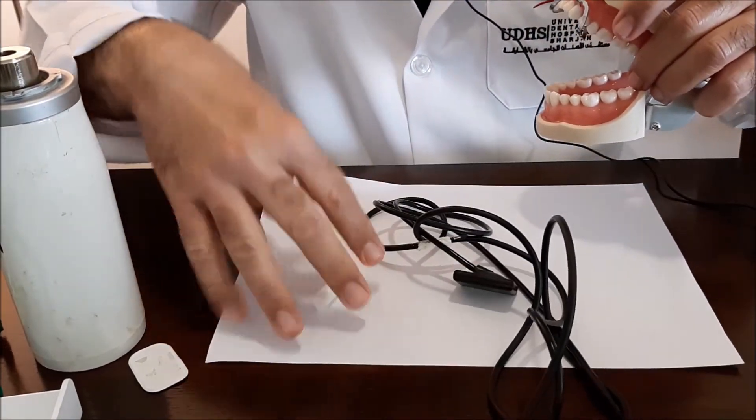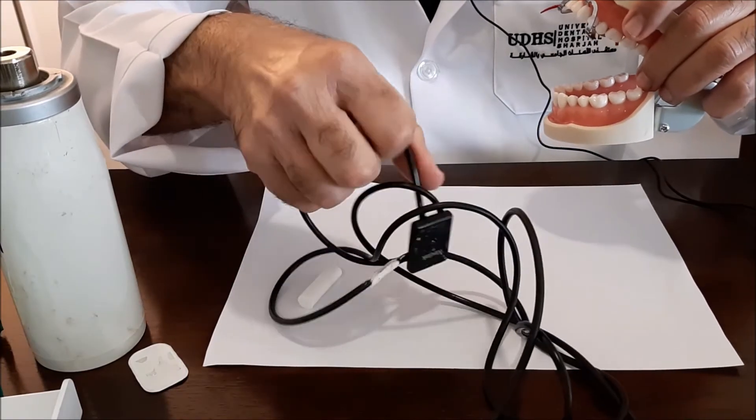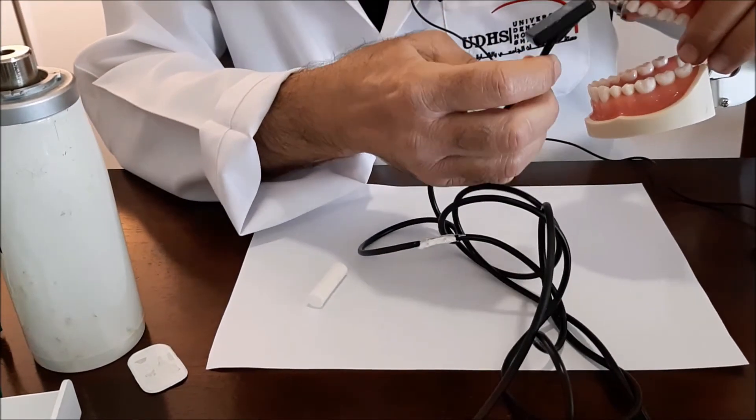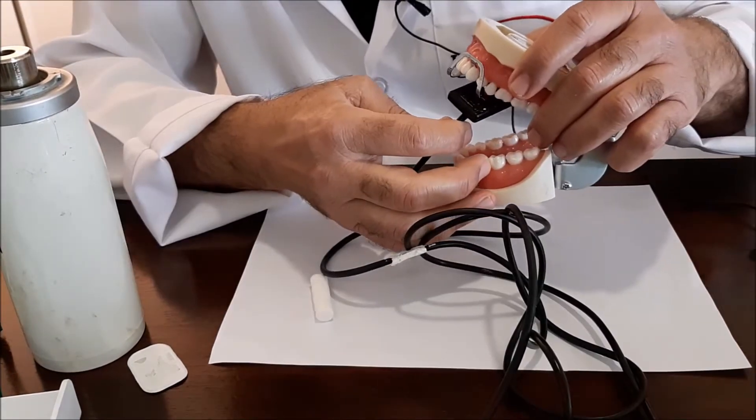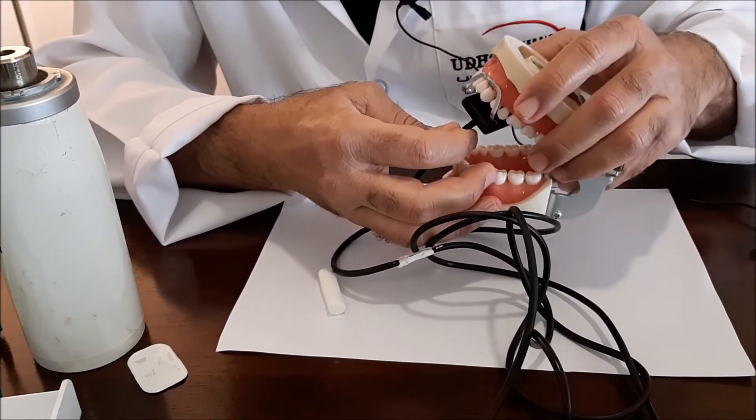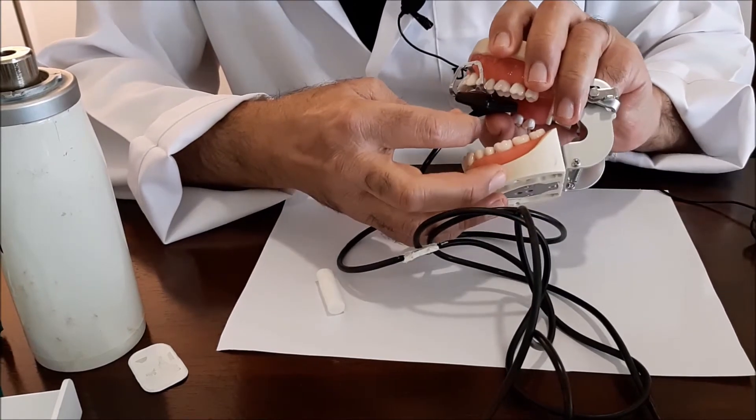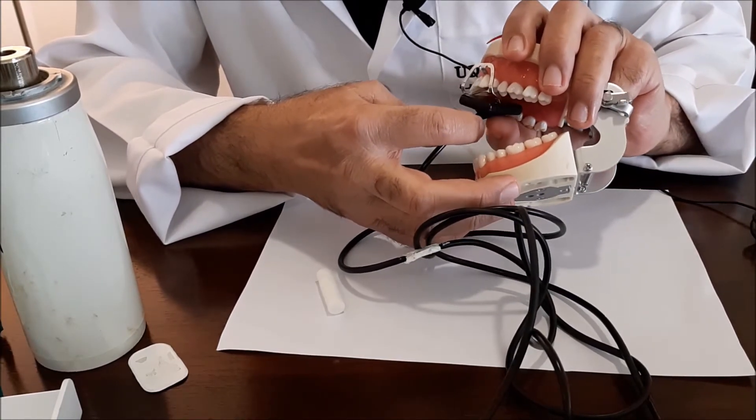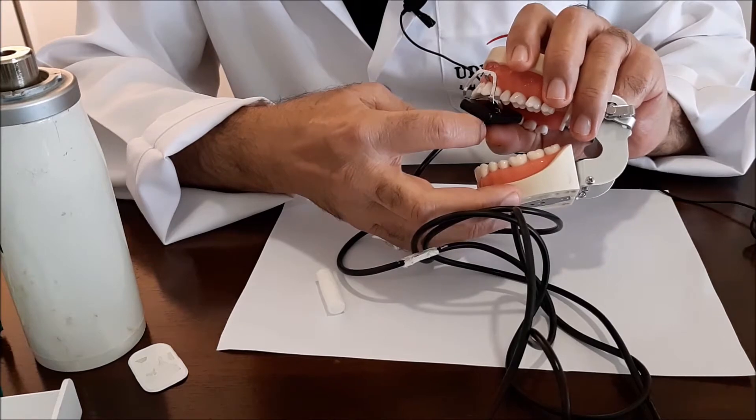Thus you're going to put the sensor exactly behind the canine. You slide the sensor all the way backwards as much as you can in order to include the canine in the radiograph.